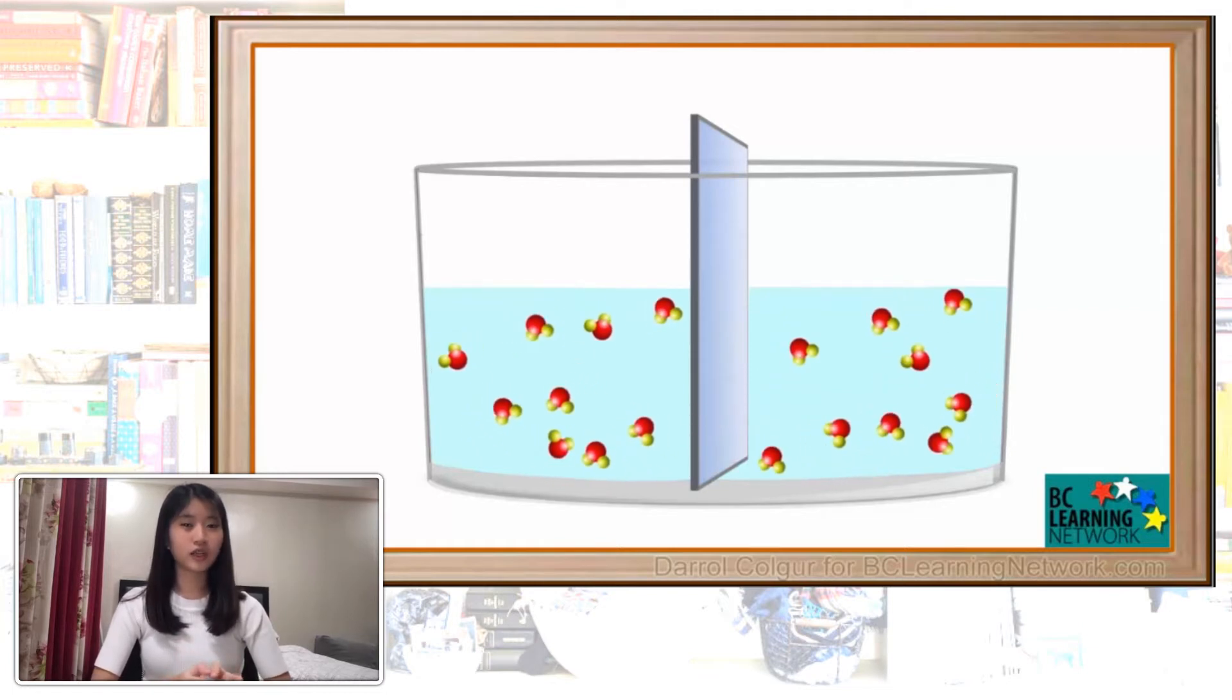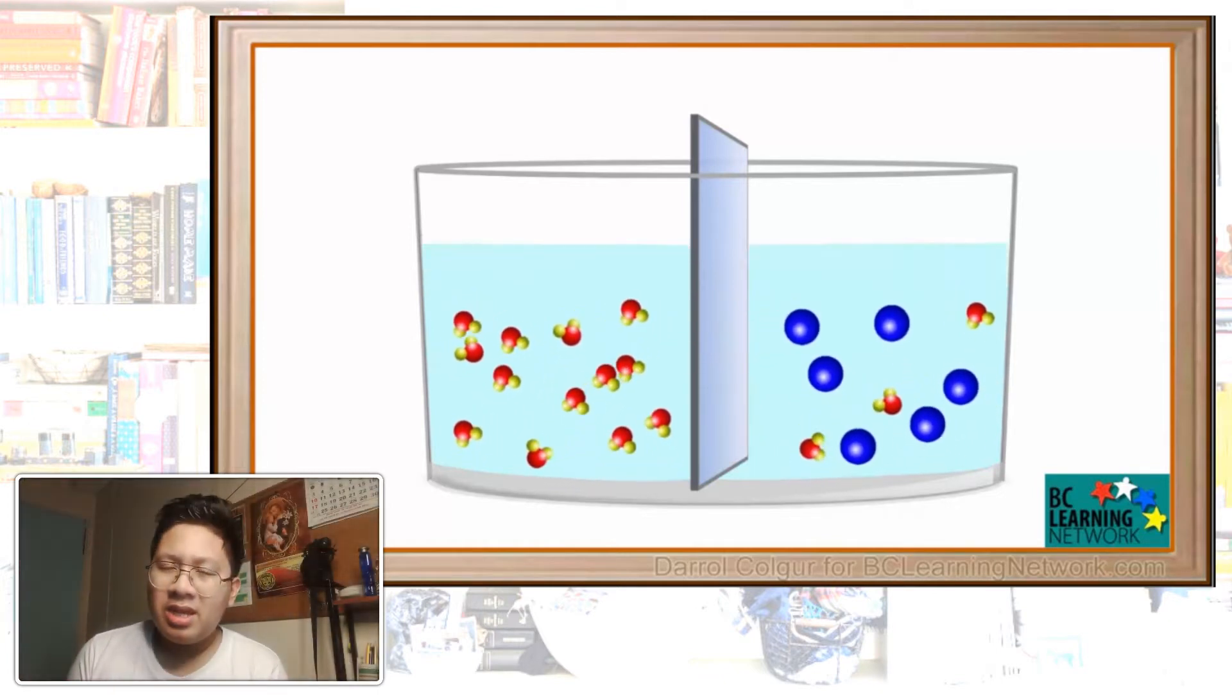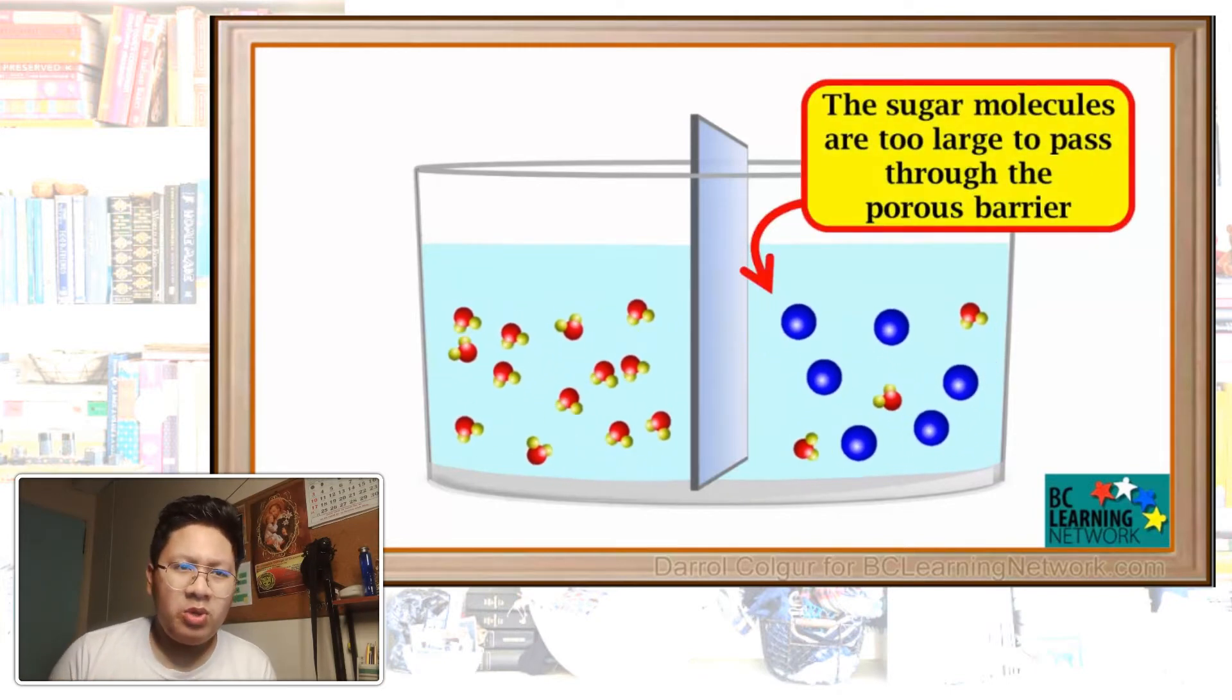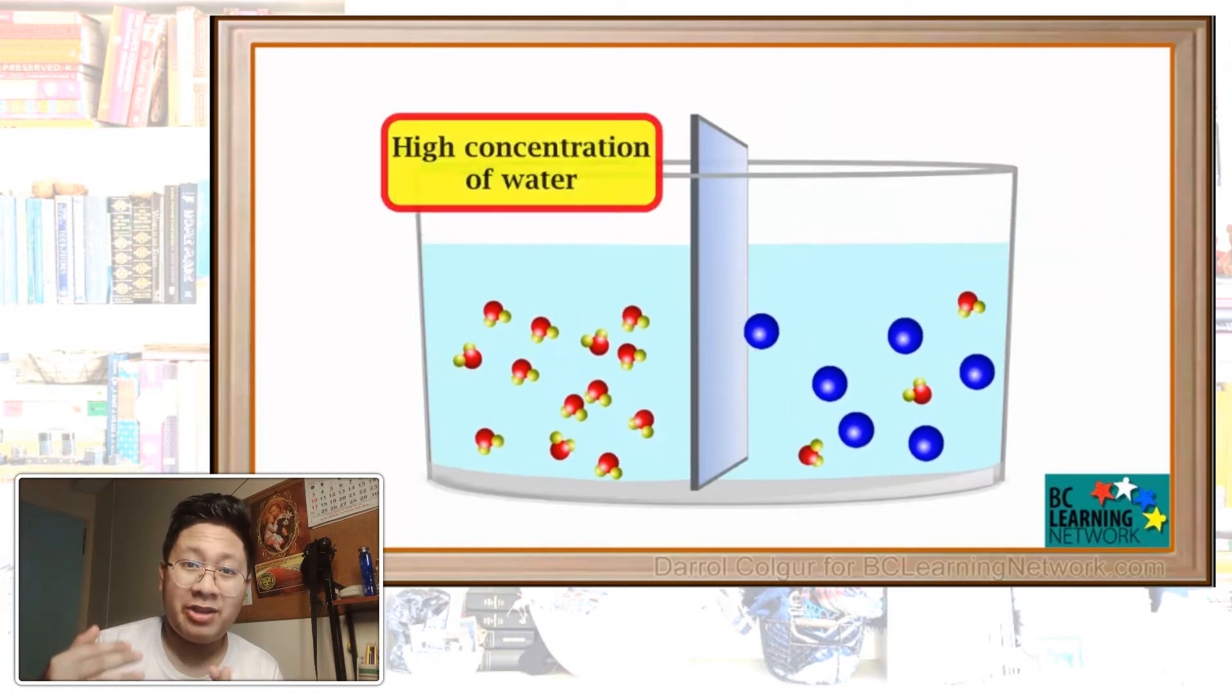You can see that they go through the barrier from left to right and from right to left. But, for each one that goes right, another one goes left. So, an equilibrium is maintained. Now, we'll add some sugar to the right side. We see that the sugar molecules are too large to pass through the porous barrier. They just bounce off it. But, water molecules are able to pass through the barrier.